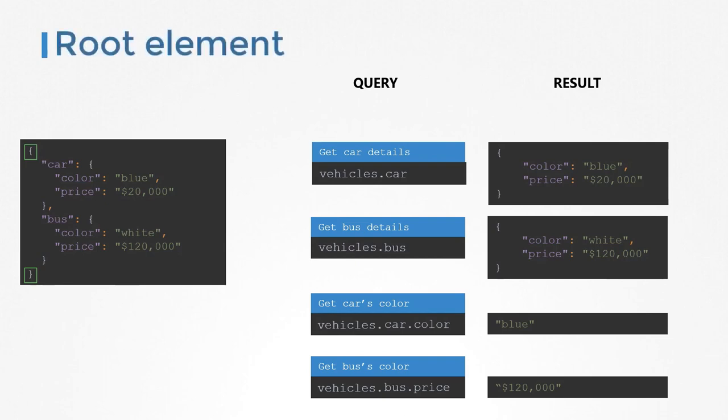We had vehicles earlier, but without it we use dollar to denote the root element — that's the right way to form a JSON path query. A query for a JSON document with a dictionary at its root should start with dollar. So: $.car, $.bus, $.car.color, $.bus.price, etc. Going back to the data with vehicles in it, vehicles is a dictionary within the root dictionary, so the queries become: $.vehicles.car, $.vehicles.bus, $.vehicles.car.color, and $.vehicles.bus.price.